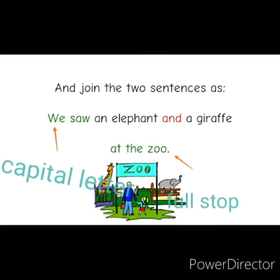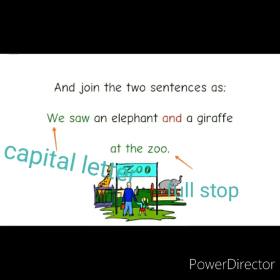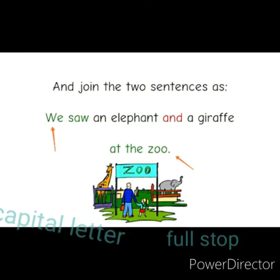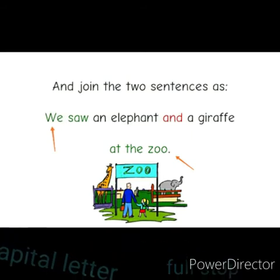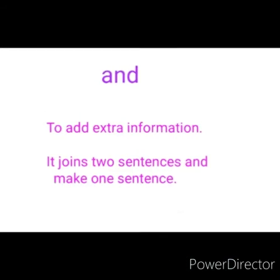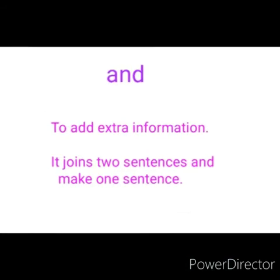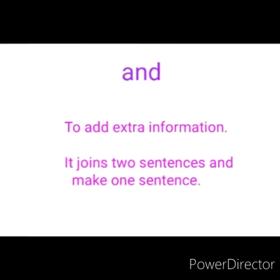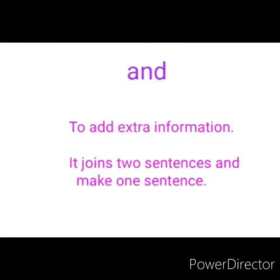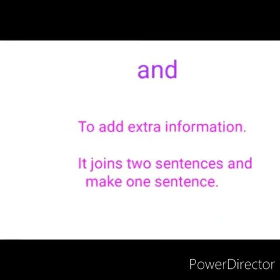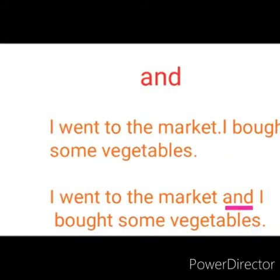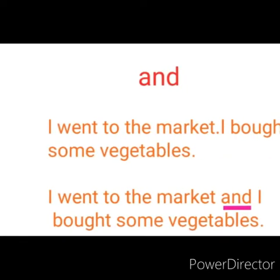The sentence begins with a capital letter and ends with a full stop — so it is one sentence. We use the joining word 'and' to add extra information. It joins two sentences and makes it one.